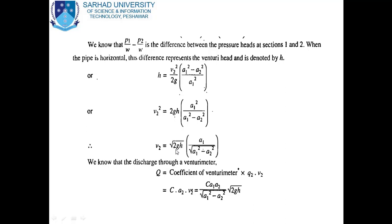The discharge through a Venturimeter is Q = C · a2 · v2, where C is the coefficient of the Venturimeter and a2 is the area at the throat. Substituting the value of v2, the final equation for discharge is: Q = C · a1 · a2 / √(a1² − a2²) · √(2gH). This is the equation used for finding the discharge through a Venturimeter. This concludes today's lecture. Thank you very much.